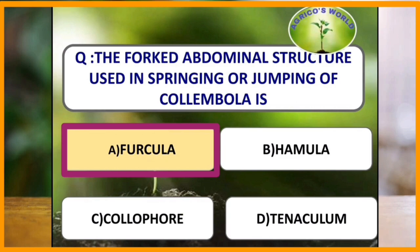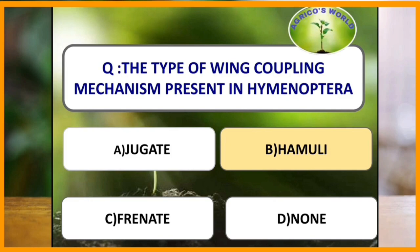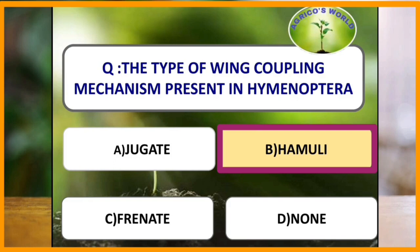The terminal body segment in some primitive arthropods is called telson. The type of wing coupling mechanism present in Hymenoptera is hamuli. In hamuli type of wing coupling mechanism, small curved hook-like structures are present on the costal margin of the hind wing, known as hamuli, that fit into the upward fold of the anal margin of the forewing.